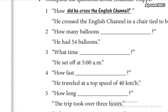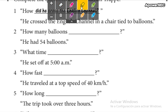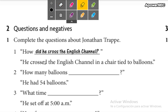For example, he crossed the English Channel in a chair tied to balloons. So how did he cross the English Channel? I am using here, you notice, here I am using the same verb.